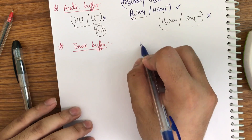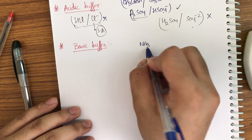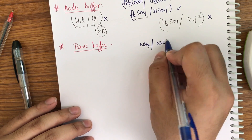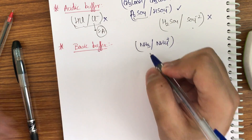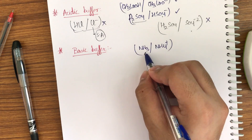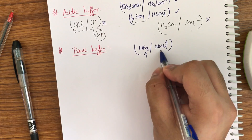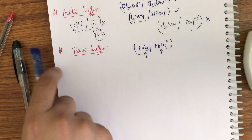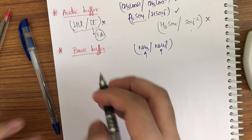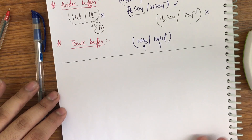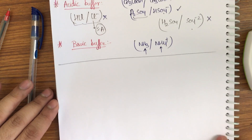For a basic buffer, you can take NH₃ and NH₄⁺. NH₃ is the base and NH₄⁺ is its conjugate acid. Now let me prove how the pH remains constant and derive the formula for the pH of a buffer solution.